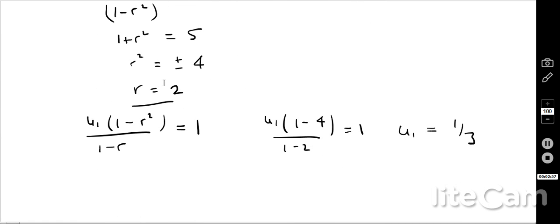Okay, once I've got my answer of r equals 2, I can then substitute the information back into the equation that I had earlier, which was u1 brackets 1 minus r squared brackets all over 1 minus r is equal to 1. So that was the sum of the first two terms being equal to 1. And now that I know that r is 2, I can put that value into the equation. And therefore, I get u1 equals 1 over 3.